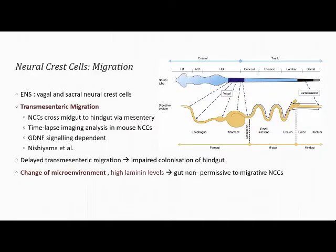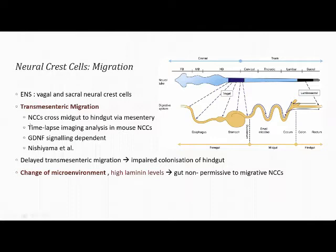The enteric nervous system is formed mainly by neural crest cells from the vagal and sacral regions, with the majority from vagal outflow. Another theory proposed by Nishiyama et al. demonstrated transmesentric migration using time-lapse imaging in mouse neural crest cells. They observed that neural crest cells cross from the midgut to the hindgut via the mesentery when the midgut and hindgut are transiently adjacent during development — a shortcut dependent on GDNF signaling. Delayed transmesentric migration could impair hindgut colonization and may also explain the rare skip lesions seen in Hirschsprung disease.